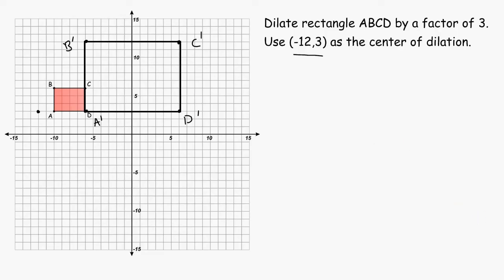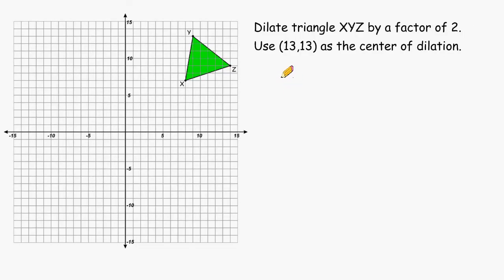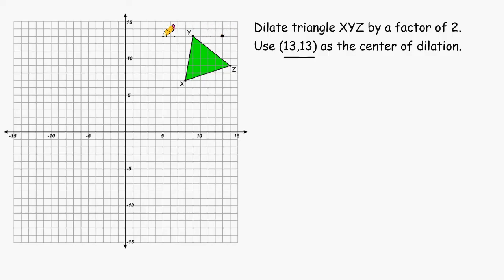Let's dilate another example. We have to dilate triangle XYZ by a factor of 2, and we have to use 13, 13 as the center of dilation. So we locate 13, 13, which is located right here. Next, we have to determine the distance from the center of dilation to each point on the triangle. Let's start with point Y. The distance from here to here is 4 units — we are only moving in the x direction, not up or down. Because we are scaling by a factor of 2, we double this distance. So instead of going a distance of 4, from the center of dilation we move a distance of 8, which is located right here. That's the new location of point Y.